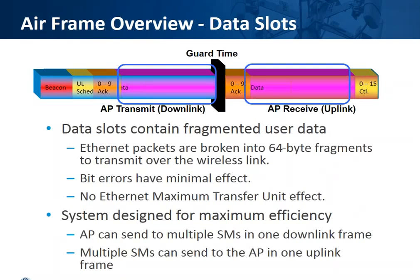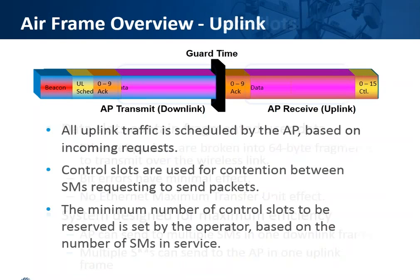Data slots are fragmented in 64 bytes — this has long been a benefit of using Canopy. If you're ever in a near or non-line-of-sight condition and part of the fragment of the packet does not get through, it won't retransmit the entire packet, just the 64-byte fragment that was not received. On the uplink, we have control slots which are set in the AP, and there is a reference for how many control or contention slots you will need per SM on your sector.